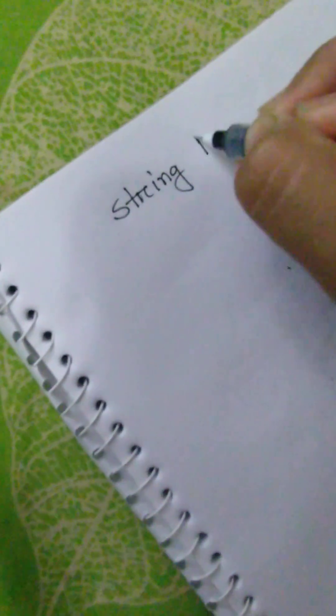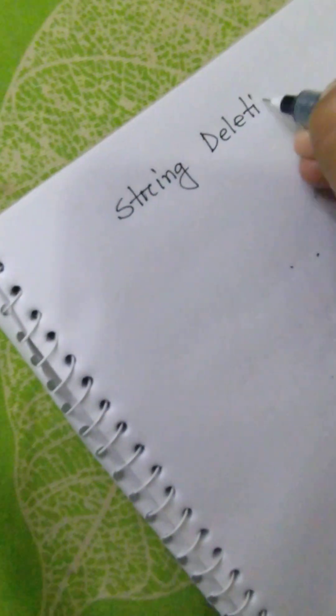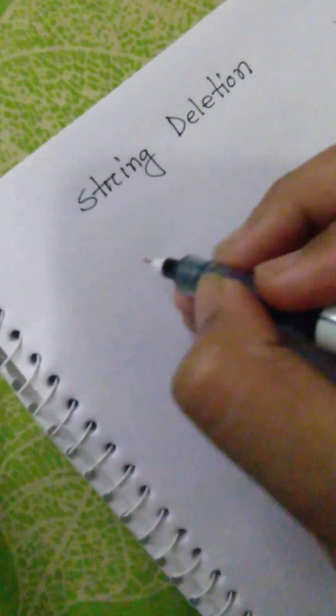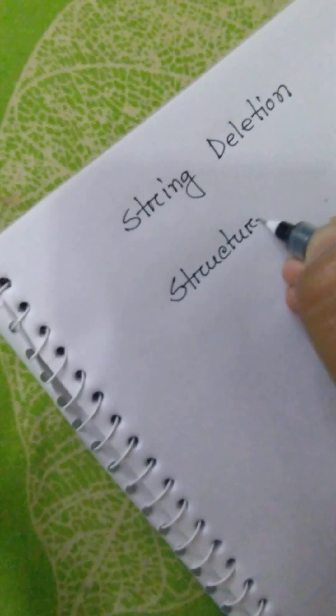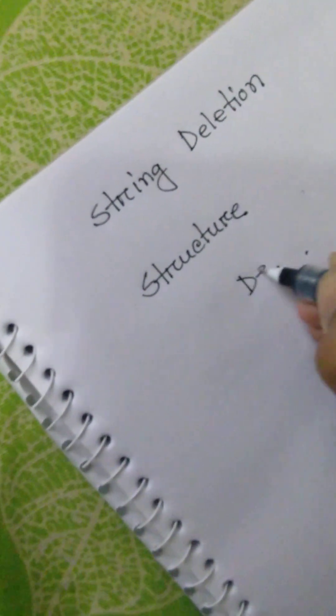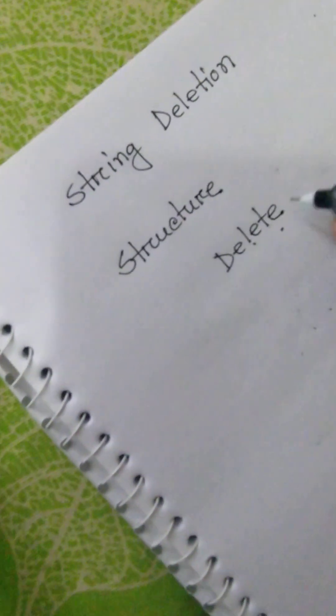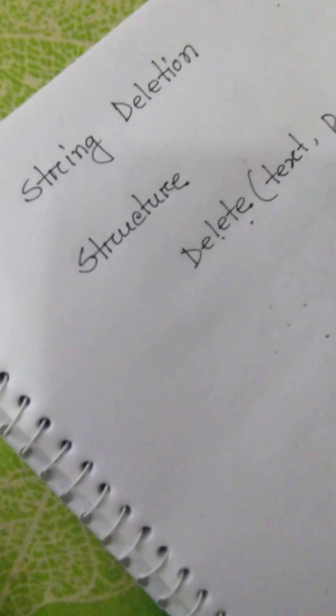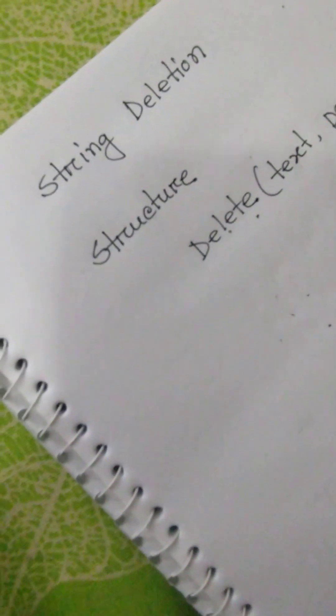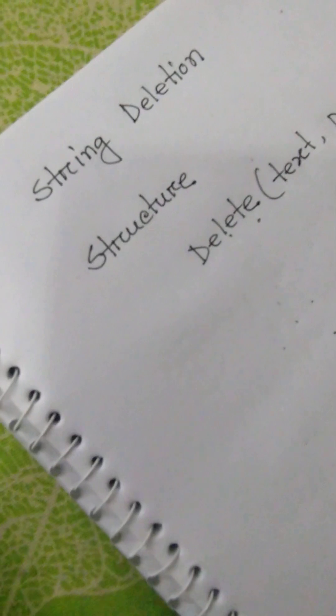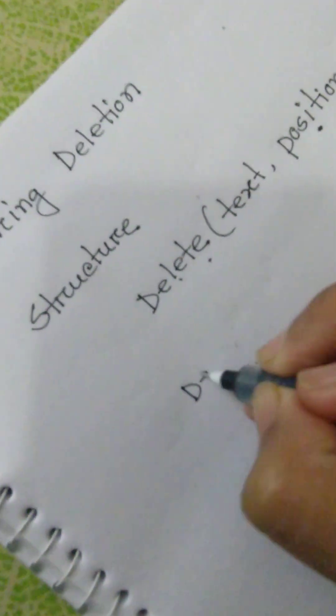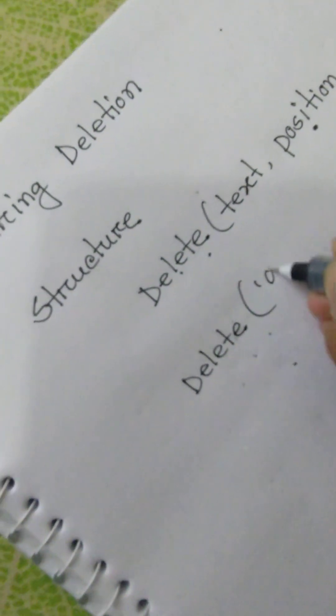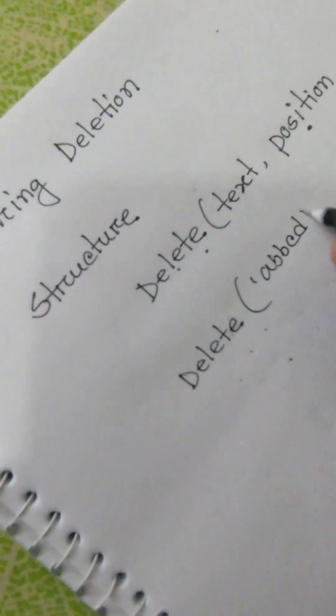String deletion: the structure is delete, text, then position, then length. Delete A B B C D. This is the text, then position which position you want to delete, number two, and what will be the length, length is three.